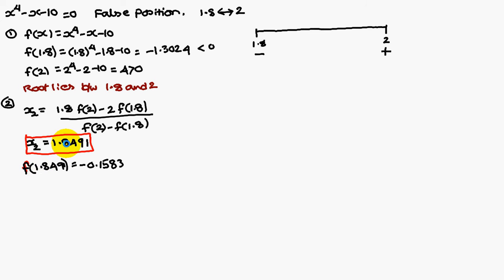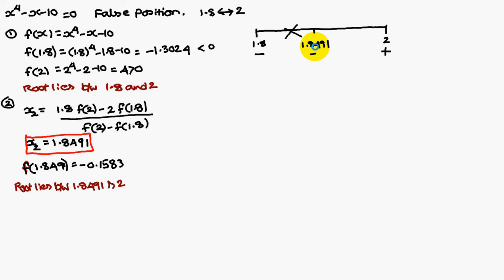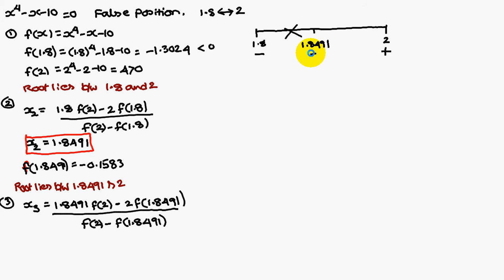We have to find f(1.8491). That is minus 0.1583, a negative value. That means the root lies between 1.8491 and 2. Next, by the false position method, x3 = (1.8491 × f(2) - 2 × f(1.8491)) / (f(2) - f(1.8491)). If you simplify, you are going to get 1.8548.